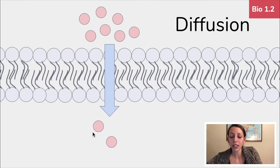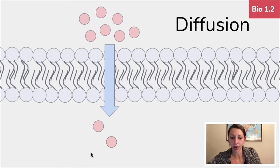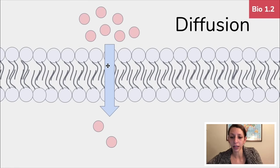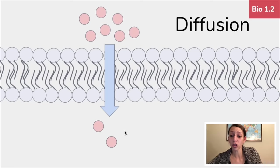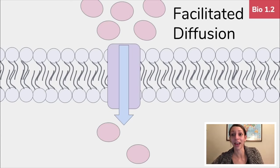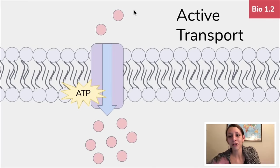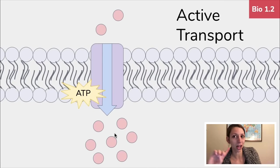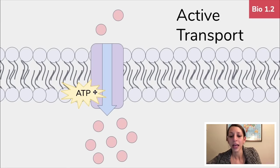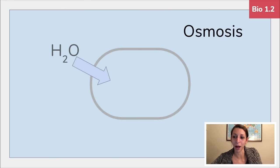Getting into cell transport: maintaining homeostasis at the cellular level involves controlling which molecules get in and out of the cell. Diffusion is the movement of molecules from high to low concentration until equilibrium is reached — called an isotonic solution when there are equal amounts of solute on either side of a membrane. Facilitated diffusion works the same way but uses a transport protein. Active transport moves molecules from low to high concentration — against the gradient — and requires ATP and a transport protein.